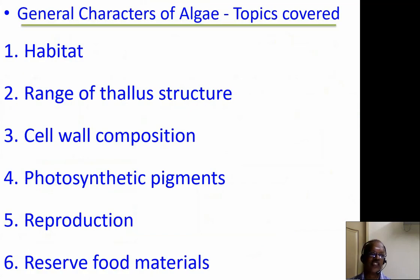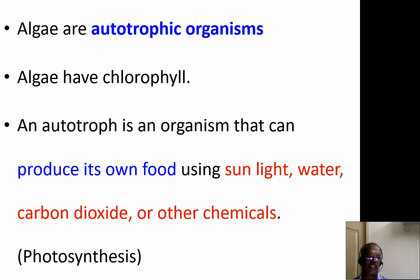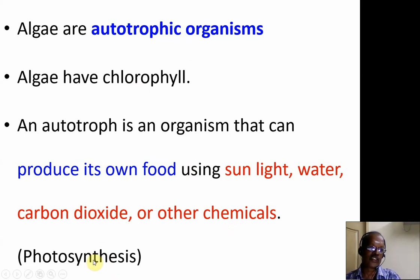Now we go to the general characters of algae. The topics to be covered are: habitat, range of thallus structure, cell wall composition, photosynthetic pigments, reproduction, and reserve food materials. All algae are autotrophic organisms — they have chlorophyll and synthesize their own food using sunlight, water, carbon dioxide, and other chemicals. This process is called photosynthesis.